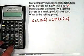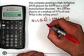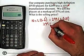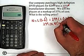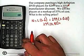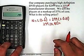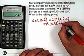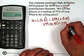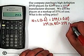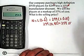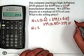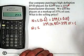1 minus 0.15 is 0.85, so 299 times 0.85. There we go — there's our net price: $254.15. The net price is also the cost, so this is also our C.